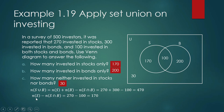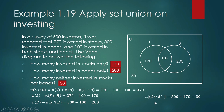The number of investors in bonds only is 300 minus 100, which is 200. The complement of S union B represents the set of elements outside S union B — that is, the number of investors who did not put their money in either stocks or bonds. It equals 500 minus 470, which is 30. So: investors in stocks only = 170; investors in bonds only = 200; investors in neither stocks nor bonds = 30.